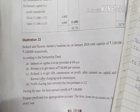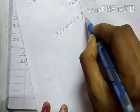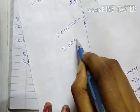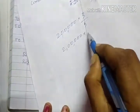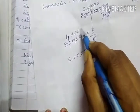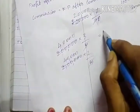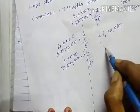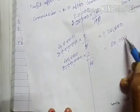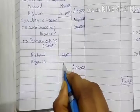Profit sharing ratio is 3 is to 2. So Rs. 2,00,000 into 3 by 5 = Rs. 1,20,000 for Richard. Rs. 2,00,000 into 2 by 5 = Rs. 80,000 for Rizwan. Total: Rs. 1,20,000 and Rs. 80,000.